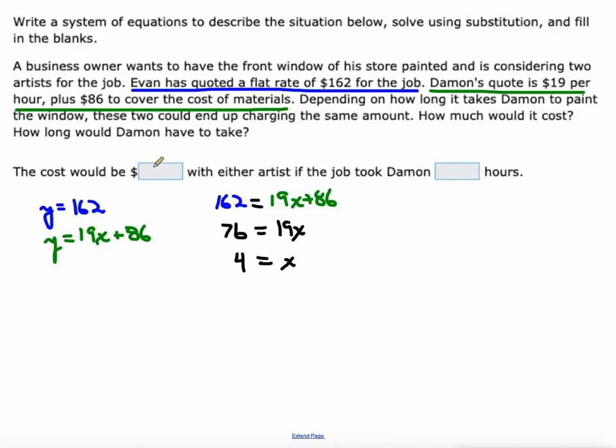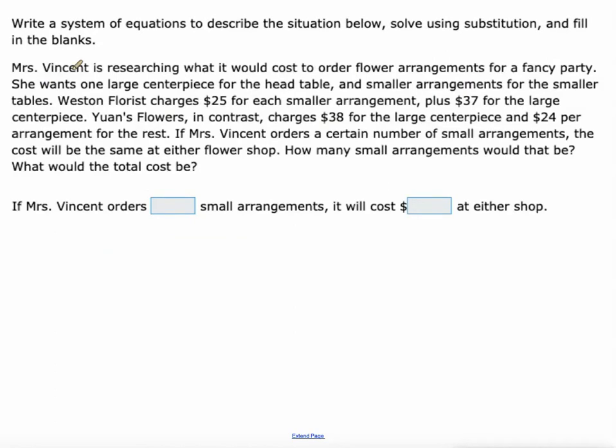Let's put that right in here. The cost would be... It would take Damon four hours and at that point, the cost would be $162 for either artist. Because we already know the cost is going to be $162. If it was going to take him more than four hours, we wouldn't pick Damon. We'd pick Evan to do the job. So we wrote a system of equations, then we put y equals y and solve that equation.